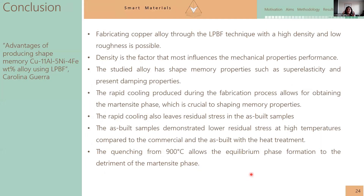As a conclusion: we achieved good density of the samples across a wide range of volumetric energy. With additive manufacturing, we favored the formation of martensite, the microstructure that enables good superelasticity — which is a great result from the additive manufacturing point of view. The best damping results were in the commercial and heat-treated samples, so with post-processing of the additive manufacturing samples — such as quenching from 900 degrees Celsius — you can achieve similar damping behavior.